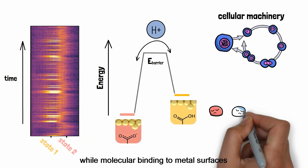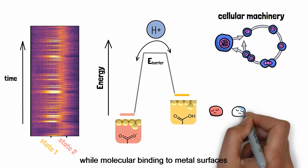Proton transfer powers our cells' machinery, while molecular binding to metal surfaces speeds up some chemical reactions to make them viable catalysts. Our advance makes it now possible to watch such chemical processes essential for our everyday lives.